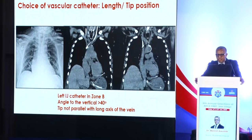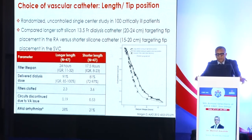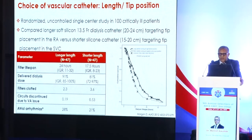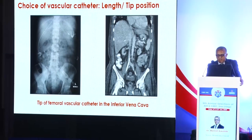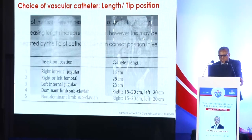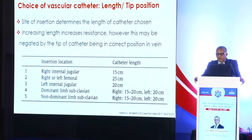A randomized study enrolled 100 patients to receive longer soft silicone catheters with tips reaching the right atrium versus shorter catheters that did not reach the right atrium. Use of the longer catheter was associated with significantly improved filter life, greater delivered dose of dialysis, and fewer circuits discontinued due to vascular access issues. The slight increase in the risk of atrial arrhythmias was not significant. For femoral catheters, it is recommended that their tips lie in the inferior vena cava, with the right and left iliac veins joining at approximately the level of the L5 vertebra as a landmark.